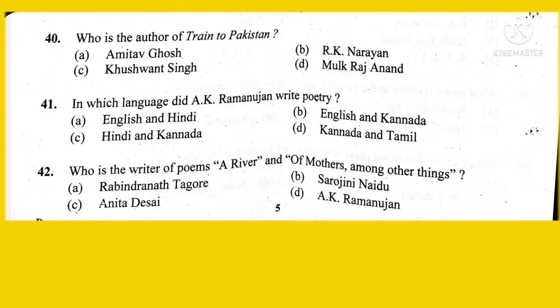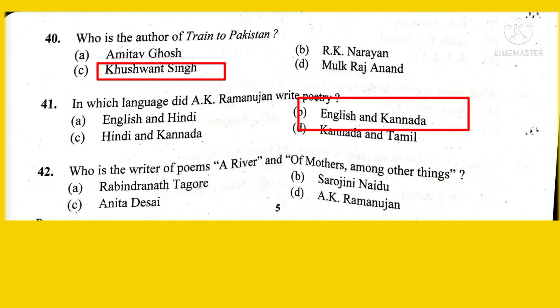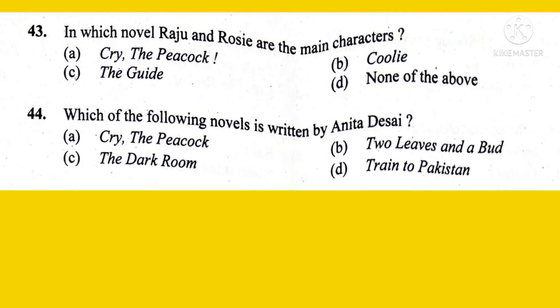Who is the author of Train to Pakistan? The right answer is Khushwant Singh. In which language did A.K. Ramanujan write poetry? The right option is B, English and Kannada. Who is the writer of the poems A River and Of Mothers, among other things? The right option is A.K. Ramanujan. In which novel are Raju and Rosie the main characters? The right option is The Guide.